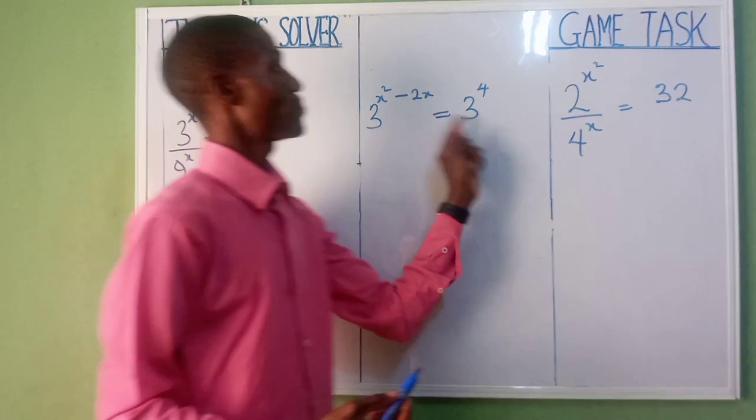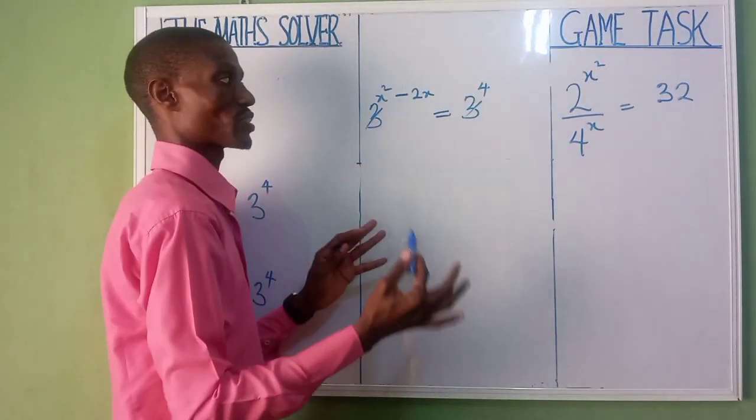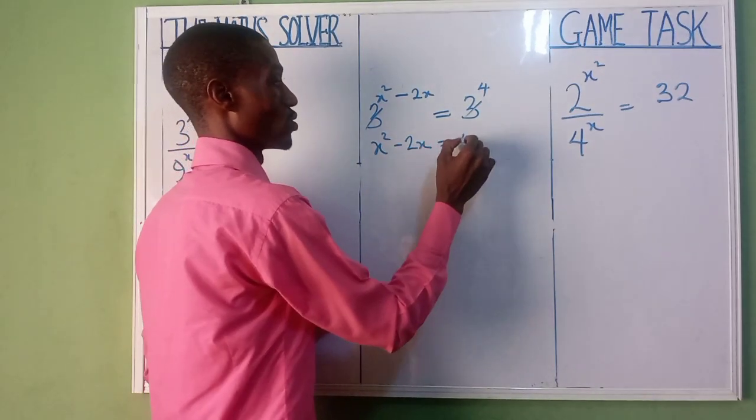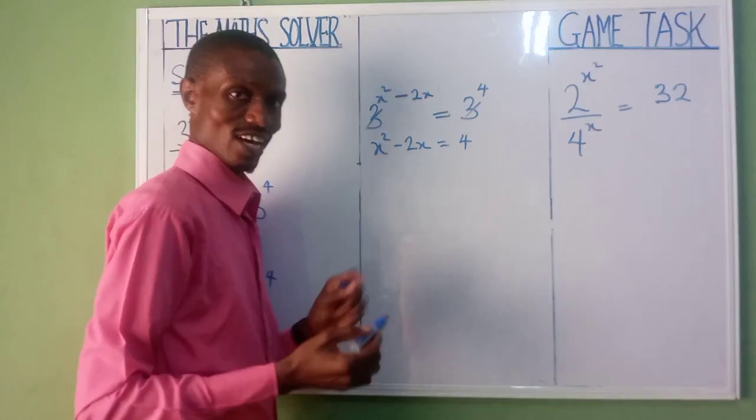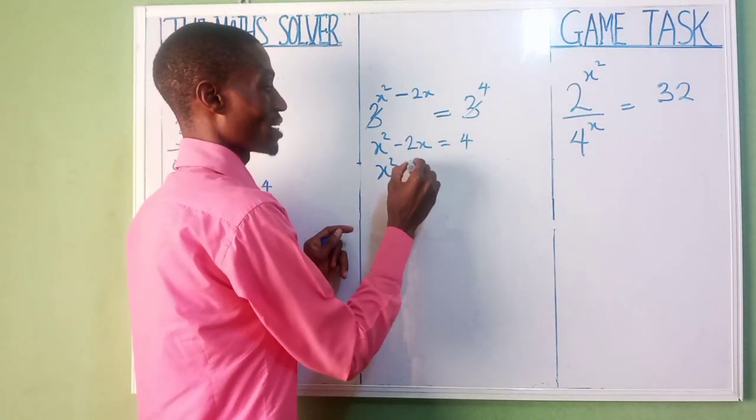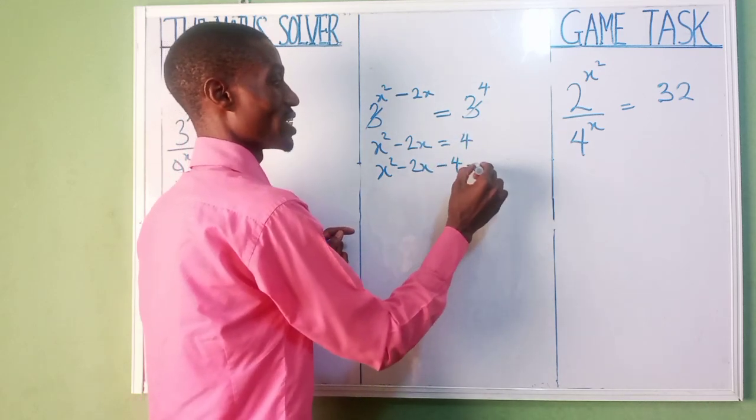As you can see, we now have the same base. Base 3, base 3. Cancel this. So far it's now the same base, we now have x squared minus 2x equal to 4. I hope you can see. Now that is x squared minus 2x.